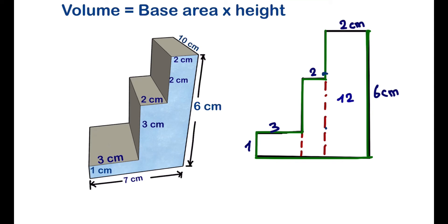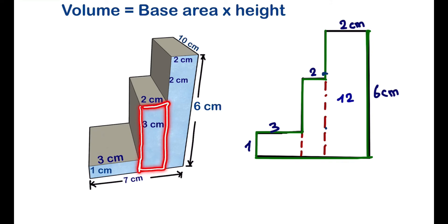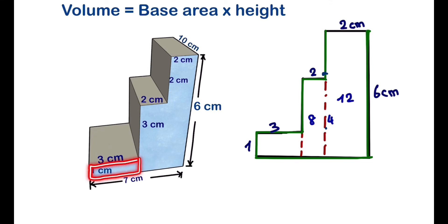The second rectangle has dimensions two and four, so the area is eight. The last rectangle has dimensions one and three, so one times three gives us three.